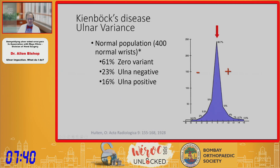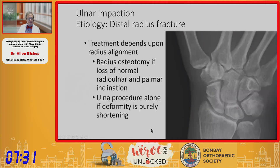Causes also include growth arrests like Madelung's, post-physeal arrest in fractures, and radial head fractures after resection. There are a whole host of issues, and of course we know that in the general population there's a range of ulnar variants, as Hultén described nearly 100 years ago.